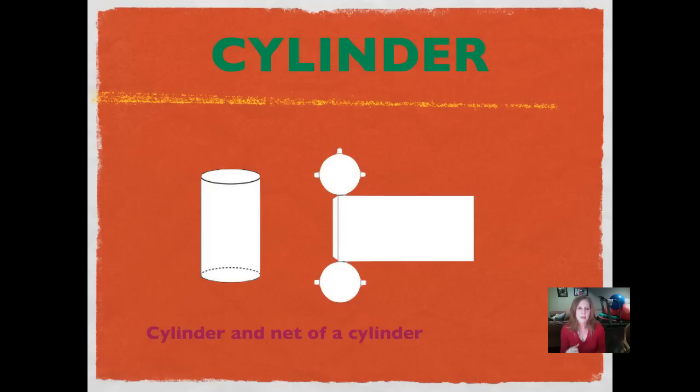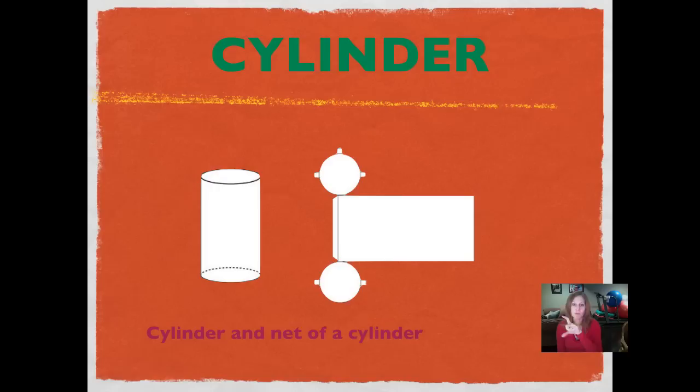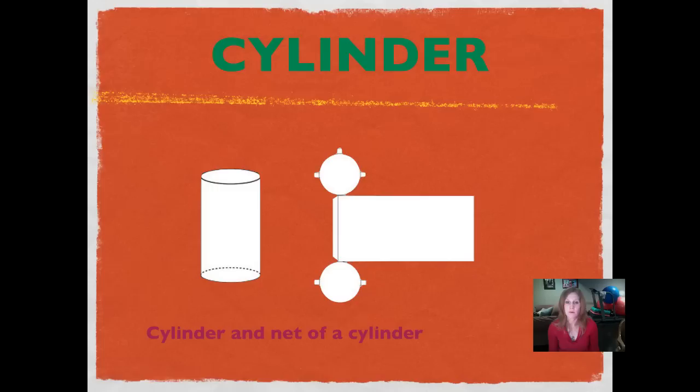A cylinder is just like a can. It's going to have a circle on the bottom base and a circle on the top base. It has two flat faces — those circles are the two faces. It has no vertices and no edges, because there are no line segments and no places where edges connect to make a vertex. When you unroll it, you can see that you have a rectangle and two circles, one on either side of the rectangle in the net.